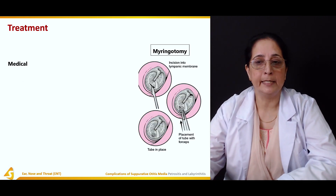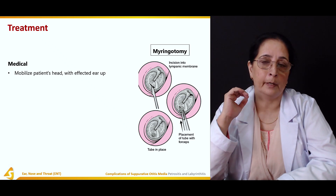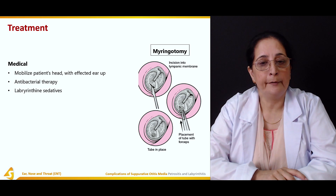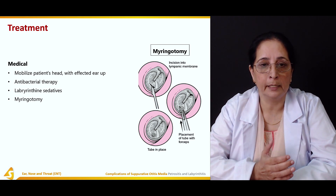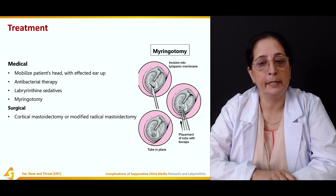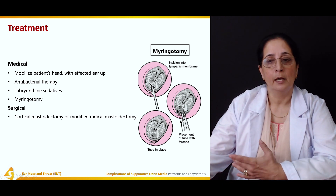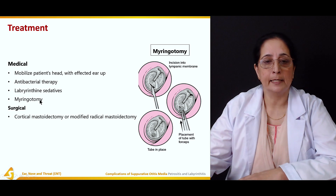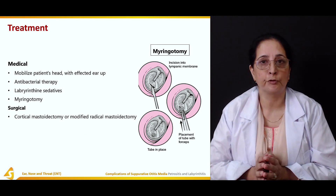Treatment: medically, the patient is positioned with the affected ear upward. Antibacterial therapy, labyrinthine sedatives, and myringotomy — opening of the eardrum with tube insertion to drain fluid — are used. Surgically, cortical mastoidectomy or modified radical mastoidectomy is performed to treat this condition.